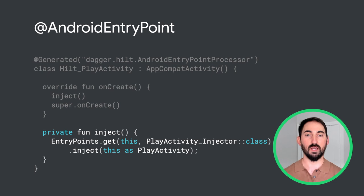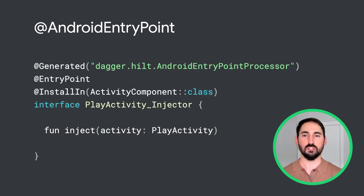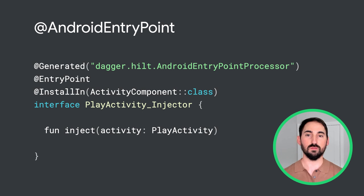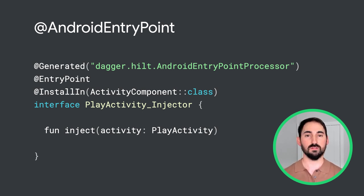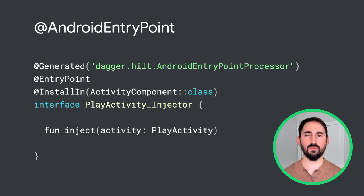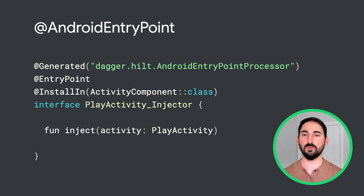The generated injector is a Hilt entry point that is installed into the activity component. It contains a single method that allows us to inject an instance of the PlayActivity. If you've ever used Dagger in an Android application without Hilt, you're likely familiar with writing these inject methods directly on the component.